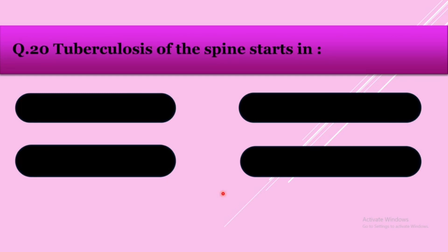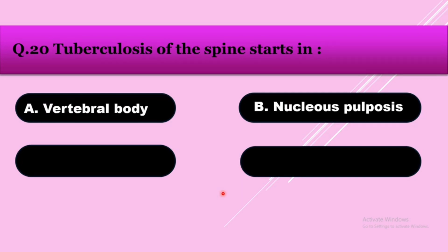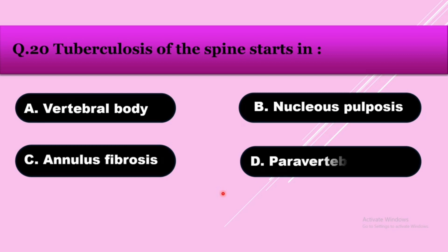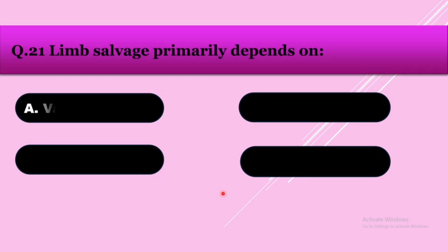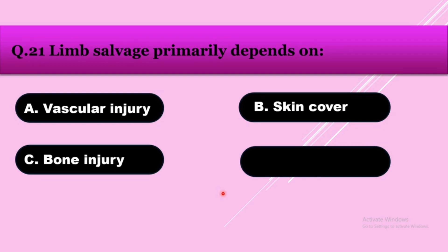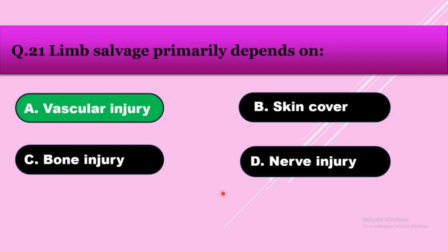Question number twenty: Tuberculosis of spine starts in — option A: vertebral body, option B: nucleus pulposus, option C: annulus fibrosis, option D: paravertebral fascia. The answer is vertebral body. Question number twenty-one: Limb salvage primarily depends on — option A: vascular injury, option B: skin cover, option C: bone injury, option D: nerve injury. The answer is vascular injury.